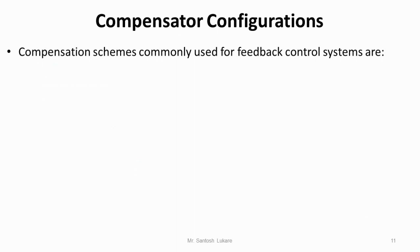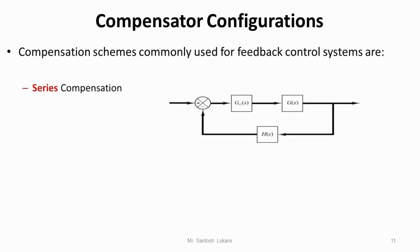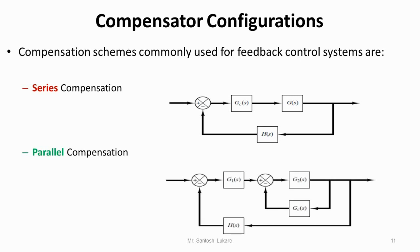The compensator configurations commonly used for feedback control systems: it could be a series compensator as shown in the figure. Here we consider the feedback control system with one more element, Gc(s), which we call the compensator. G(s) is the plant and H(s) is the feedback element. Gc(s) is an additional component or subsystem inserted into the main feedback control system to improve its performance. The second type is parallel compensation, where Gc(s) is in parallel with the plant — G2(s) and Gc(s) are in parallel with each other.